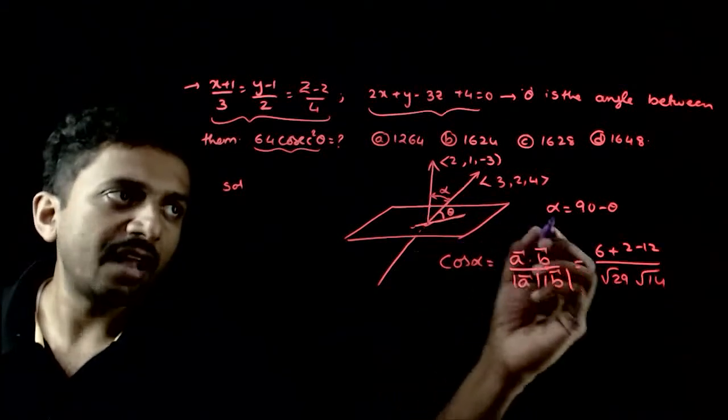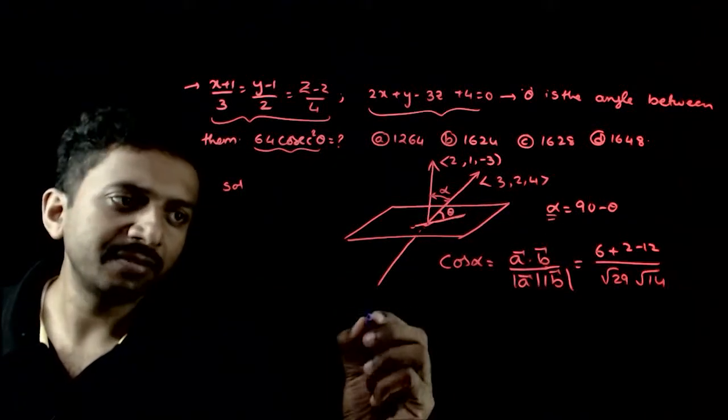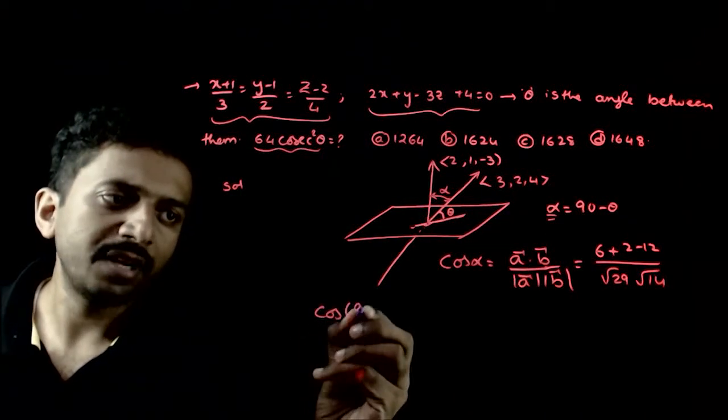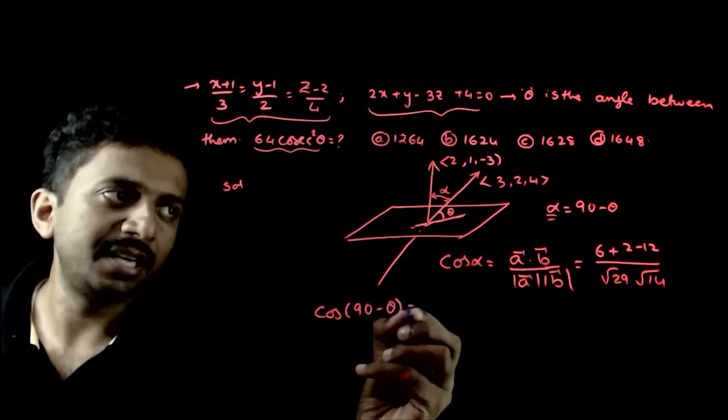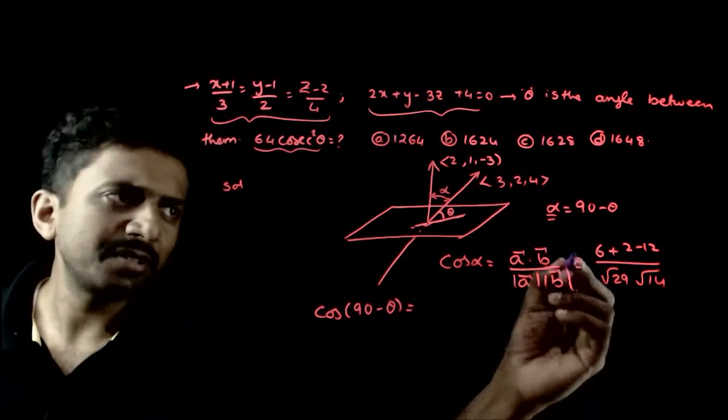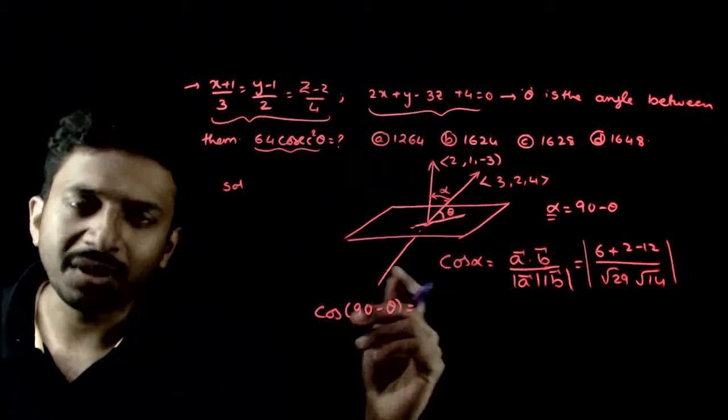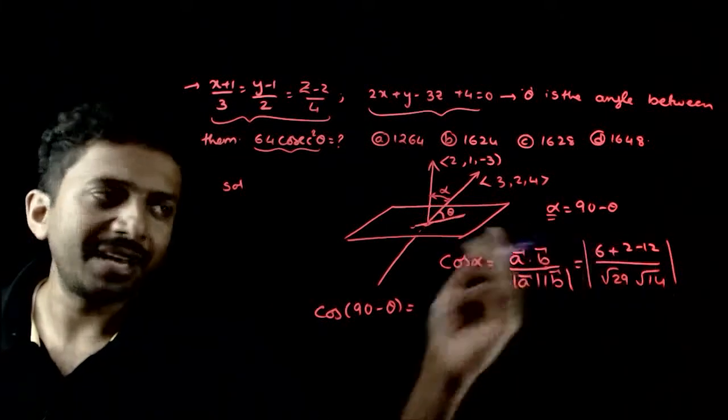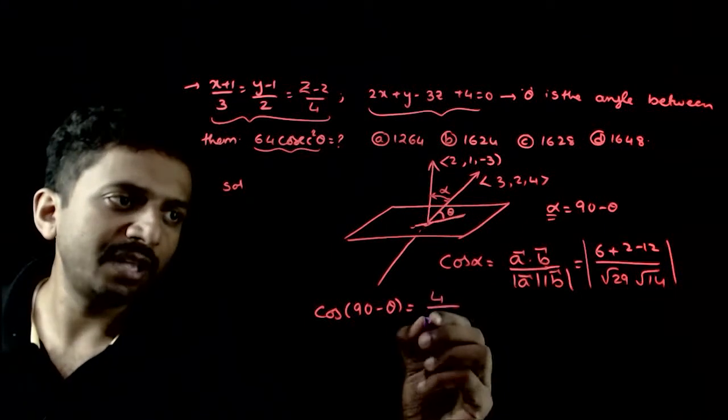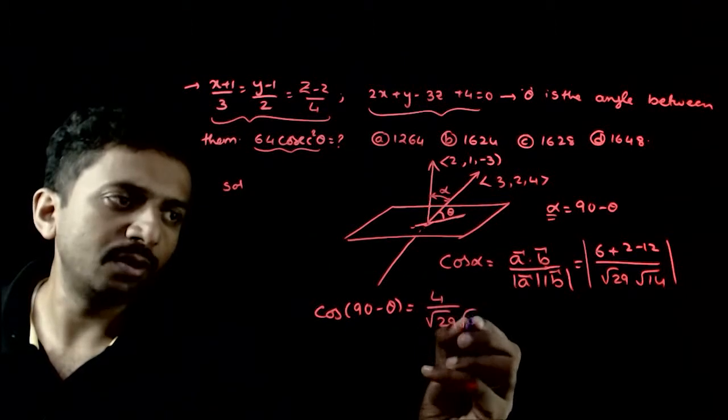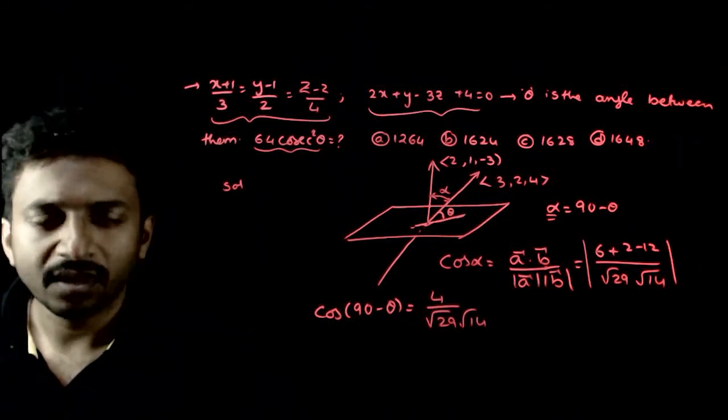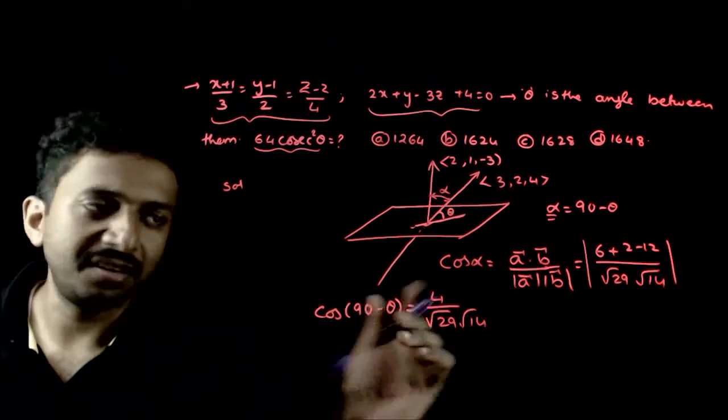So, this is cos alpha. Alpha is nothing but 90 minus theta. Cos of 90 minus theta is equal to sin theta. So, 8 minus 12 that is 4 by root 29 into root 14. Cos 90 minus theta is nothing but sin theta.